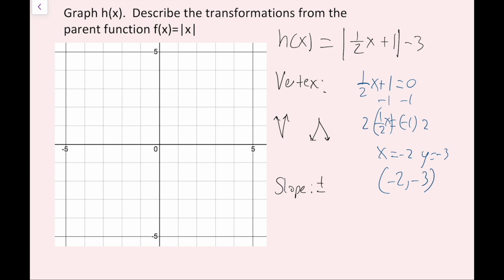I'm going to plot the point (−2, −3). Now, is my graph going to be a V shape or an upside-down V? There's no negative sign on the outside, so it's going to be a regular V. The slope is just the number being multiplied by x, which is one half, so it's positive one half and negative one half. From my vertex, I go up one, right two, and continue that pattern; then up one, left two, and continue that pattern. Now I'll draw my rays from the vertex through those points.